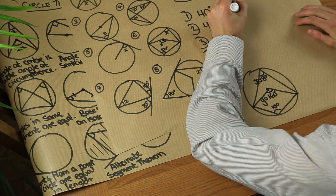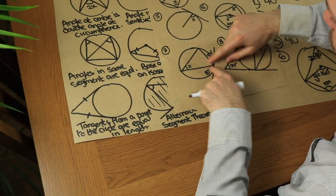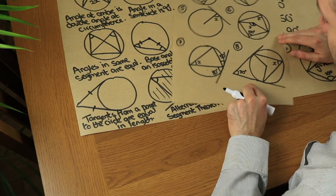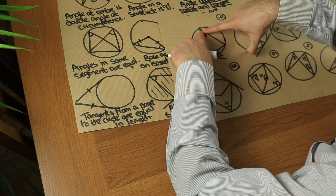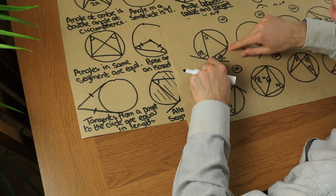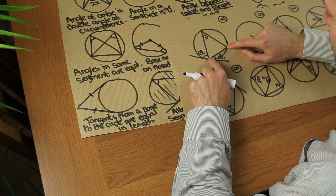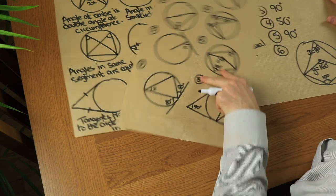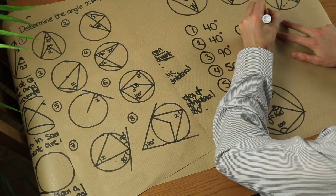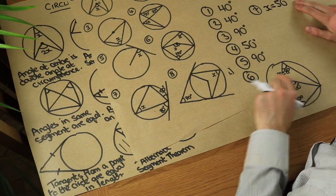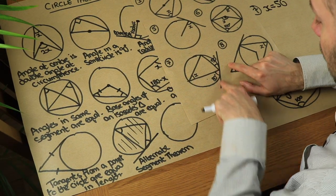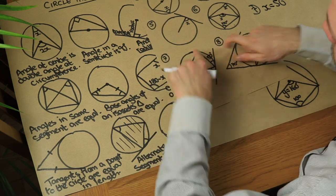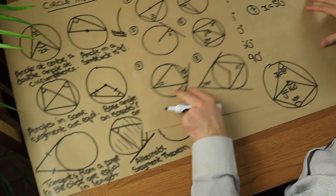For question seven, we have a tangent with two chords attached — we use the alternate segment theorem. Firing from the two ends of the chord to the circumference, that angle x matches the angle between the chord and the tangent, which is 50 degrees. So x equals 50 degrees. The 80 degrees relates to the other chord's angle at the tangent, and firing from that gives the corresponding circumference angle of 80 degrees.